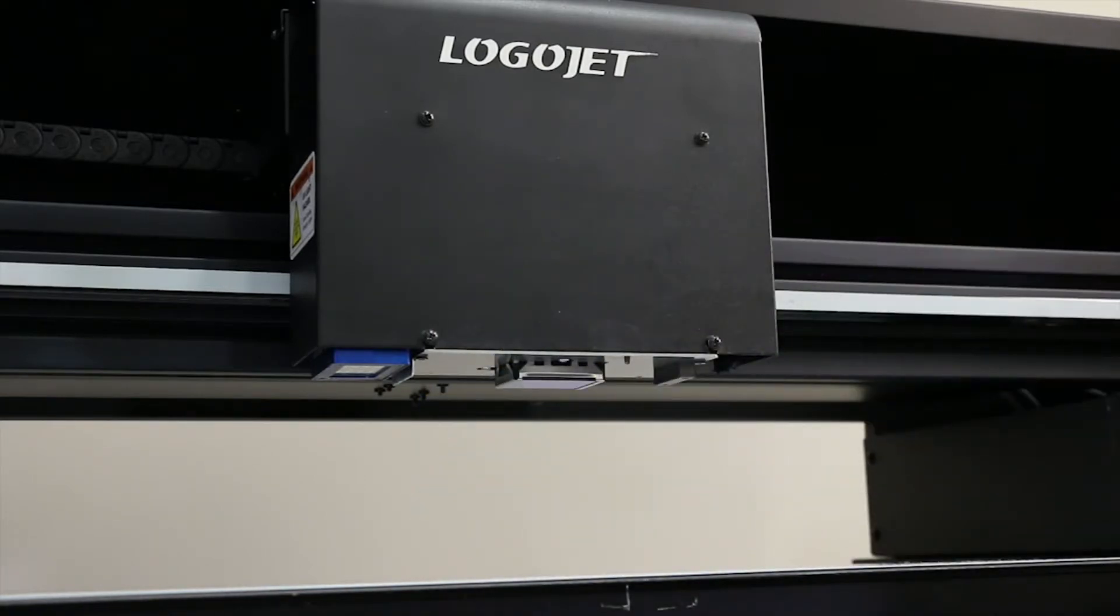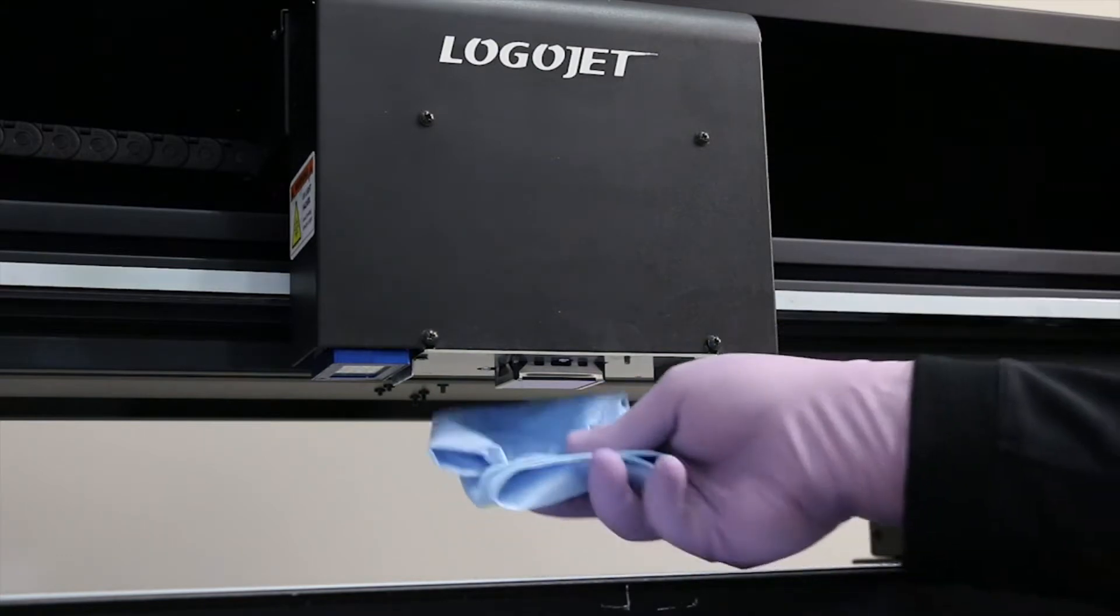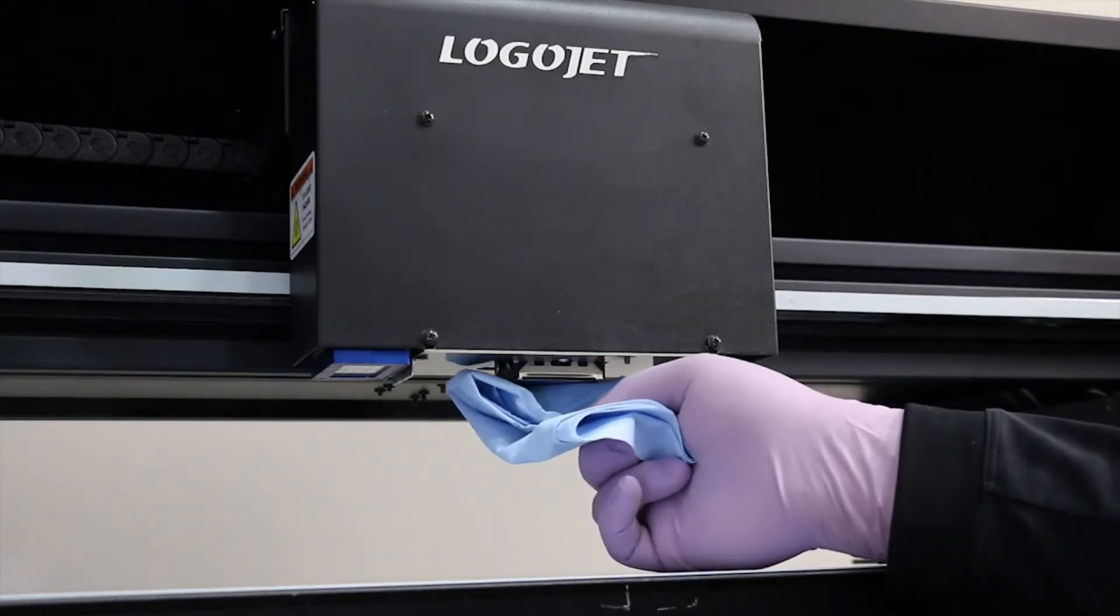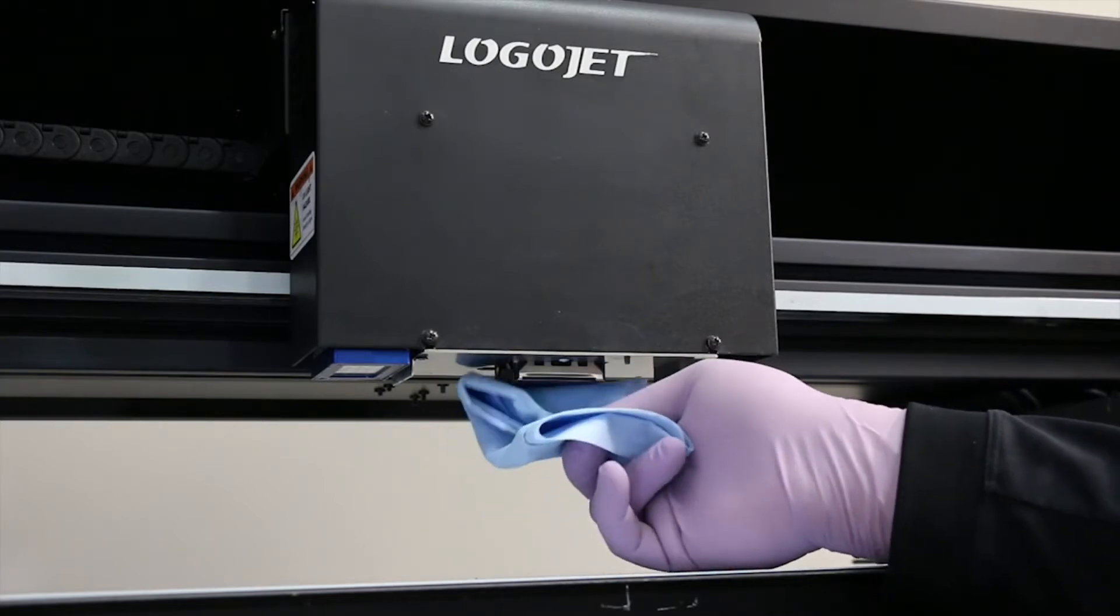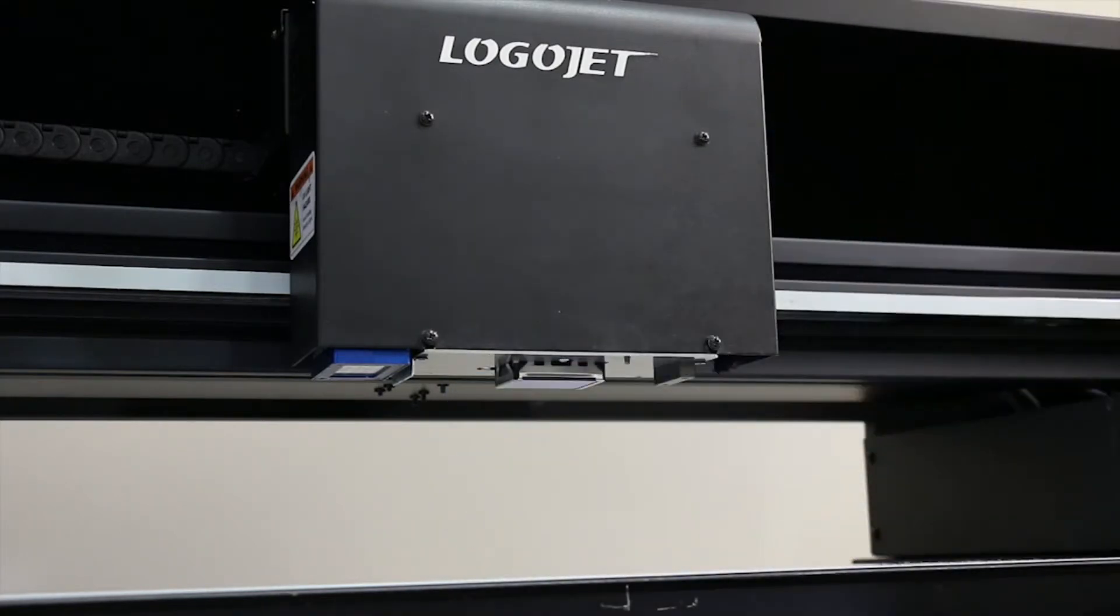Once we have that clean, we're going to go to a new place on the towel and add more alcohol. Then from there, we can wipe down the bottom of the print head nice and gentle. Do not apply pressure, letting the alcohol and the towel do the work here. That looks good.